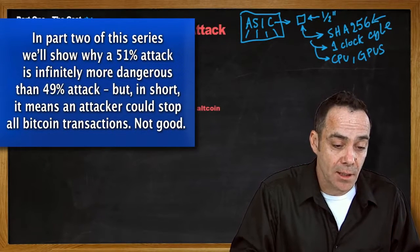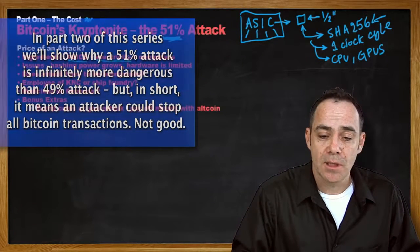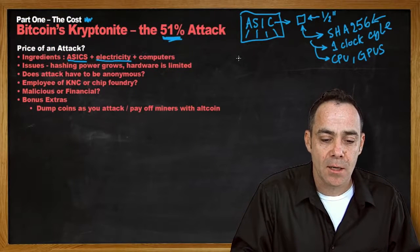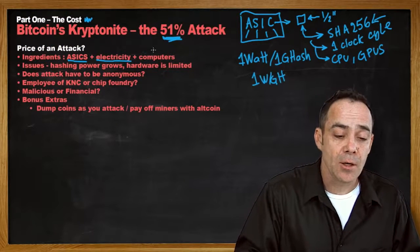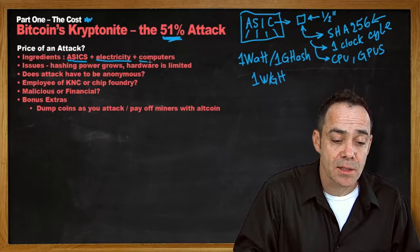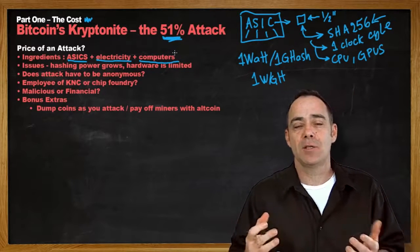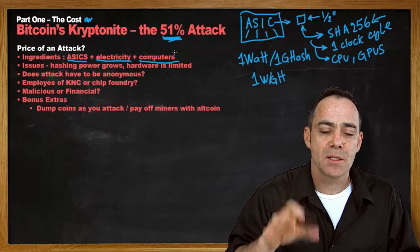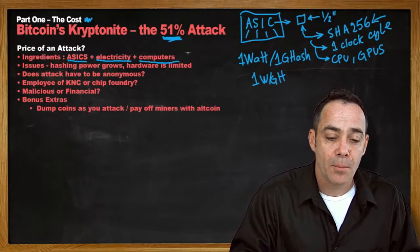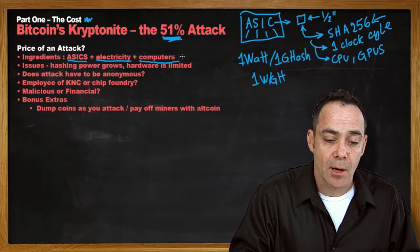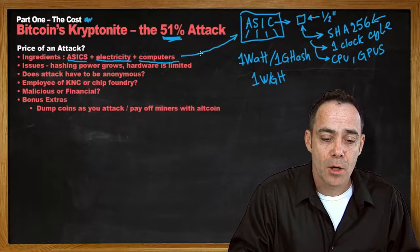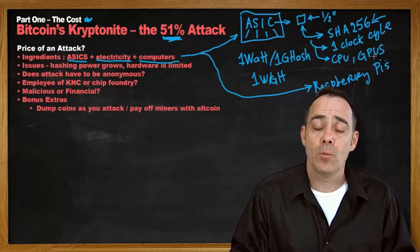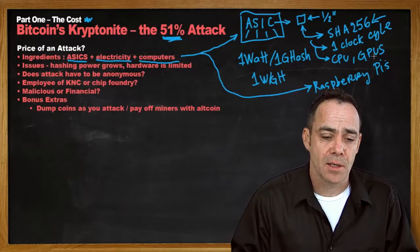Once you have your ASICs, you are going to need to power them up — they are pretty power hungry. A good rule of thumb is you are going to need about one watt per gigahash. You will also need some computers for the ASICs to connect to the internet, access blockchains, and connect to a mining pool. Because most ASICs now come with a little special hardware, you can mostly just use really cheap Raspberry Pis, and with one Raspberry Pi you can run a number of ASICs.